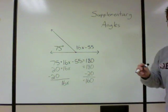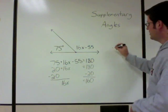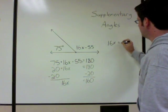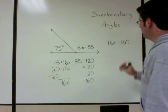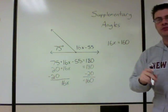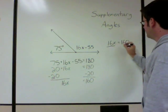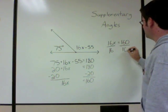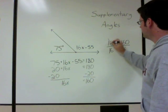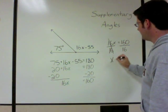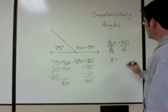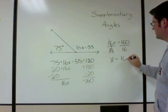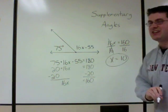Rewriting: 16x equals 160. Divide both sides by 16 — the 16s cancel on the left, and 160 over 16 is 10. So x equals 10 in this problem.